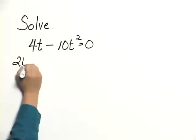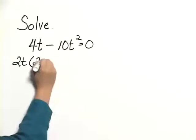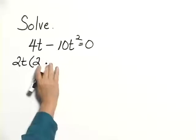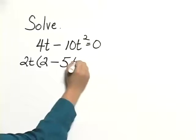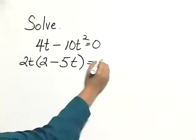So I write 2t times (2 minus 5t), and that's equal to 0.